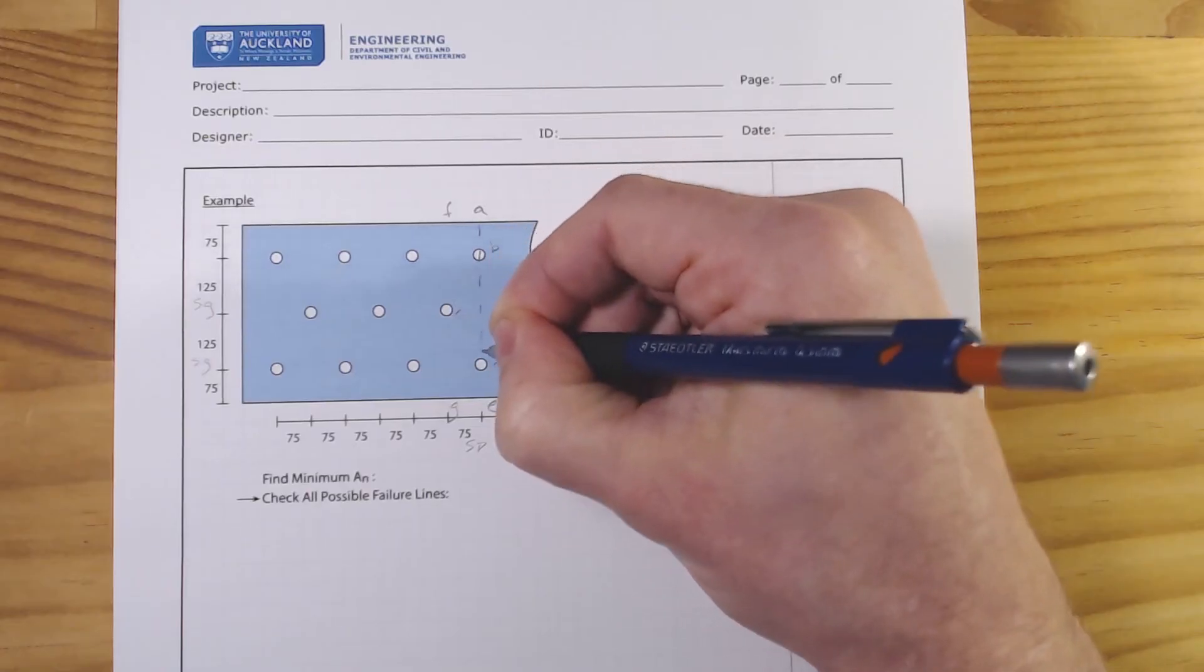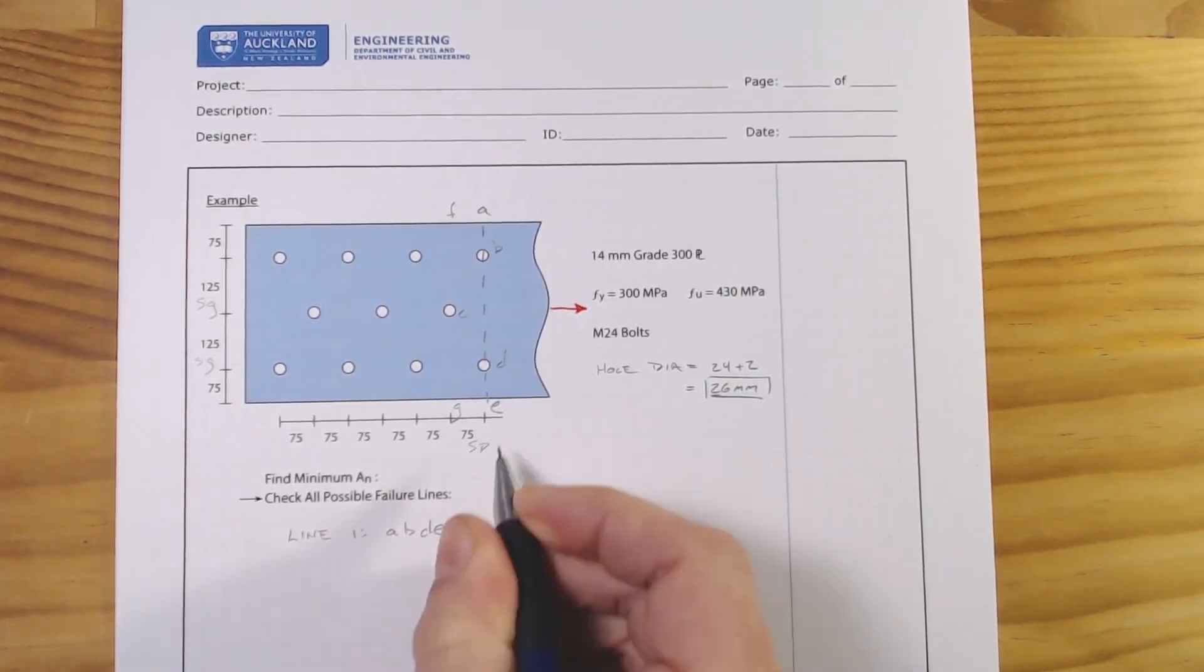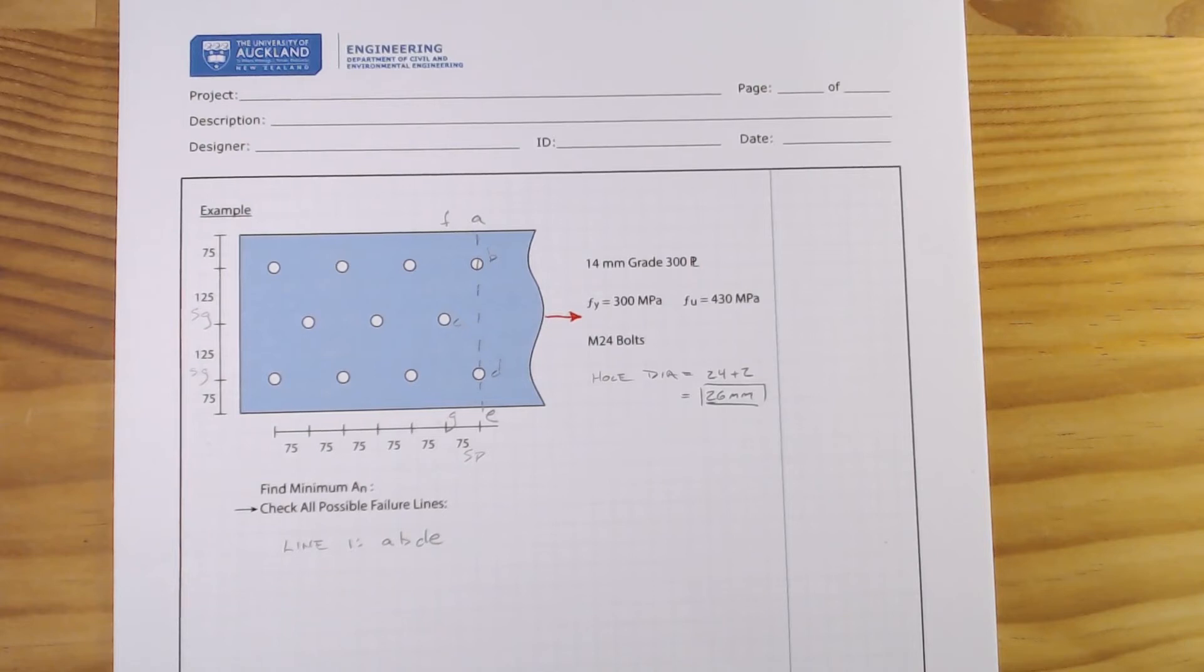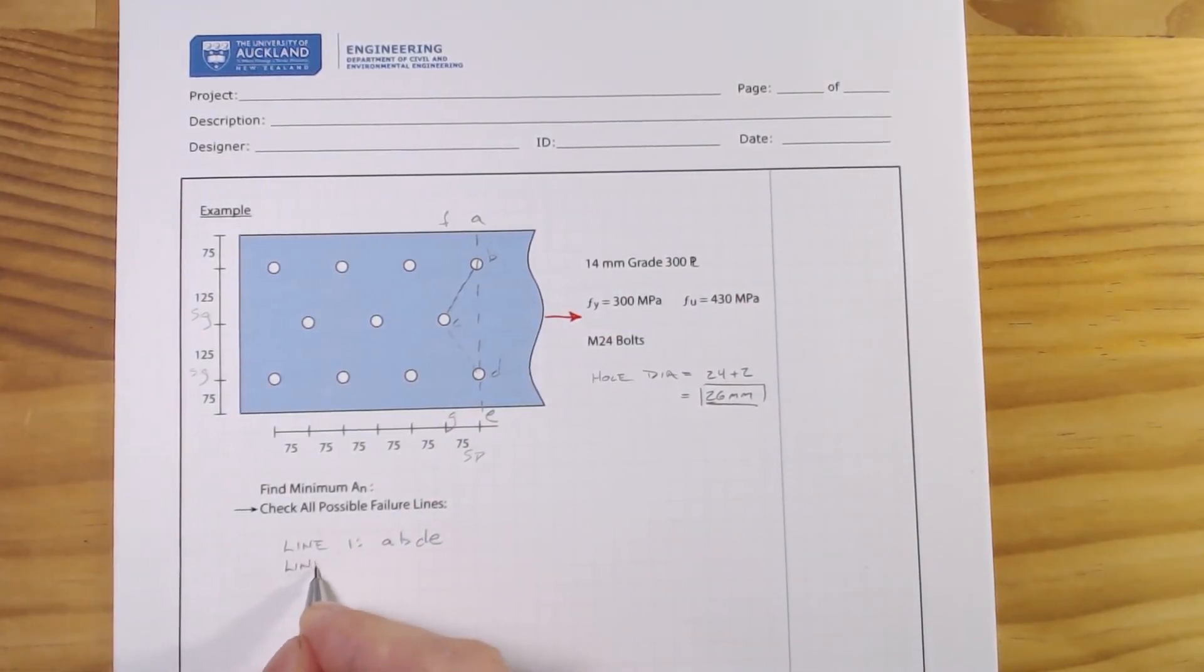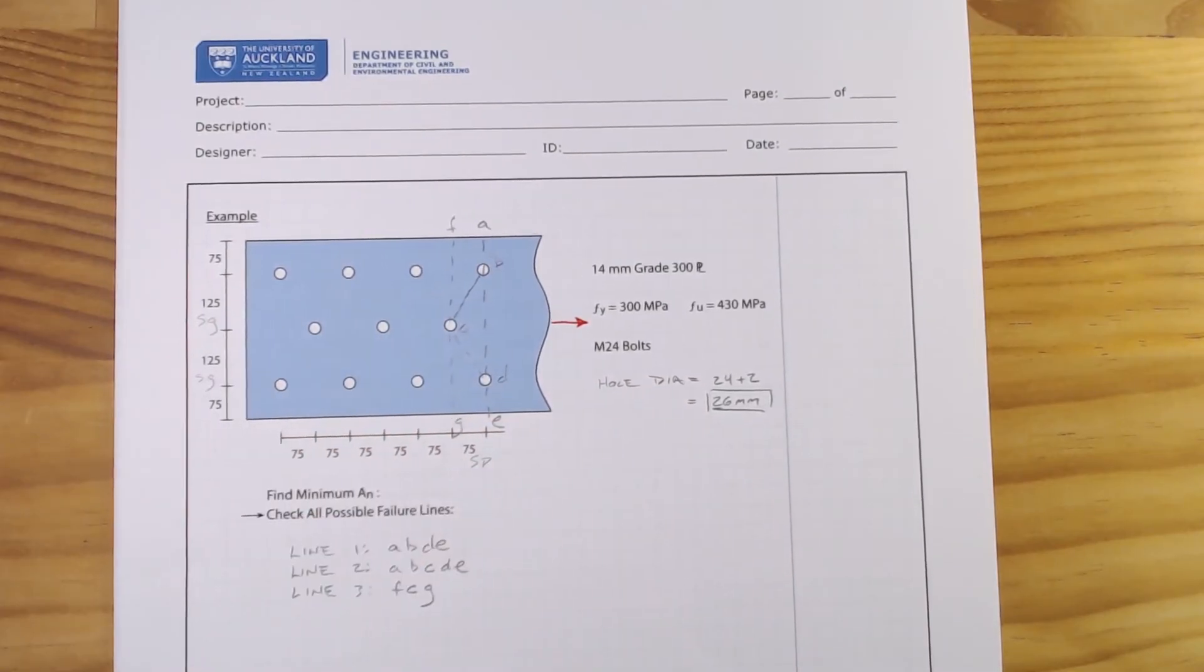Well, we've got one which is just our classic net area. So we'll write that down. We'll go line one, it'll be A, B, D, and E. So that's the same failure which we could have if it were with equally spaced holes and no stagger. Another way it could fail could go from A to B, and then it could come along C, D, E. So line two is A, B, C, D, and E. And then our final line would just be from F, C, G. And then we've come back through and we've effectively repeated the pattern that we have.